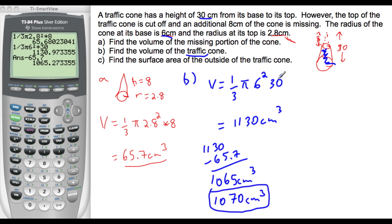All right, in the last part, we need to find the surface area of the outside of just the cone. So what we can do is find the surface area of the whole cone and subtract the surface area of this top bit that we cut off.